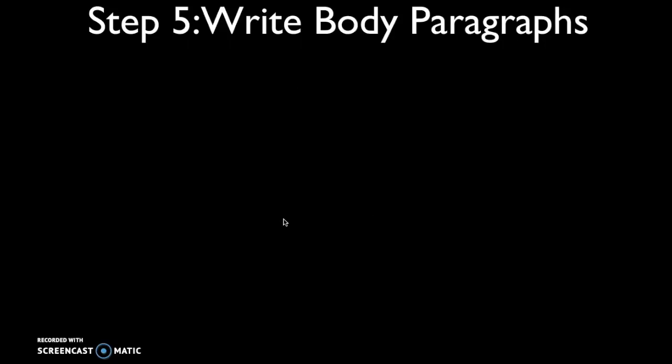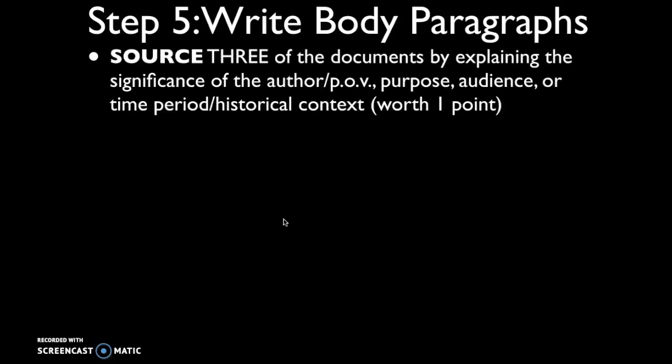Whenever you're using documents, for three of those documents you also need to source them. When you source a document, you're explaining the significance of the author — the test calls this point of view — the purpose of the document, the intended audience, or the time period and historical context. This is worth one point if you correctly source three documents. I always encourage students to source four, because this is a hard skill and students often make mistakes. If you source three and make a mistake, you get zero points. If you source four and make a mistake on one, you could still score the point — so put some insurance in for this skill.